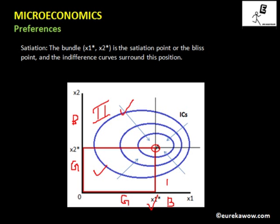Similarly, in quadrant four, x1 is a bad and x2 is a good. Since one of the commodities is a bad, the indifference curves are again upward sloping because less will be preferred to more. In quadrant one — where both x1 and x2 are bads — the indifference curves are concave to the origin. It is very essential to note the direction of increasing utility: as you move towards point A, utility increases in this quadrant because the consumer is willing to consume less of both goods, since both are bad. Consuming nothing of either good gives the most utility.